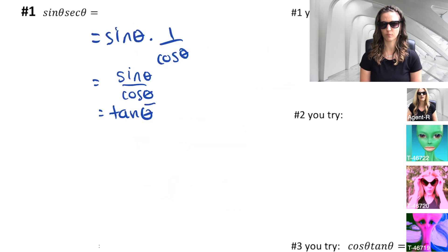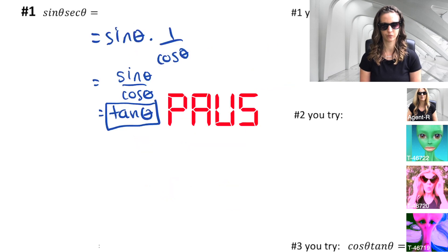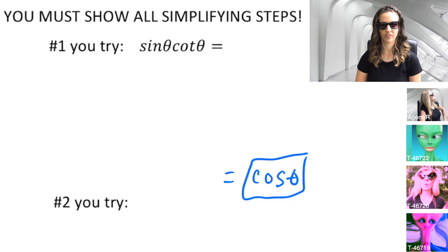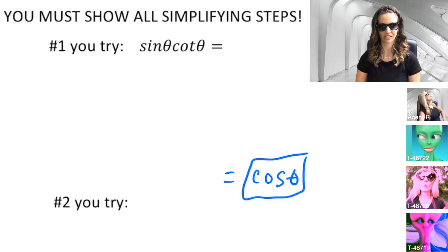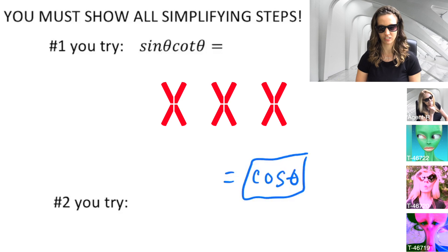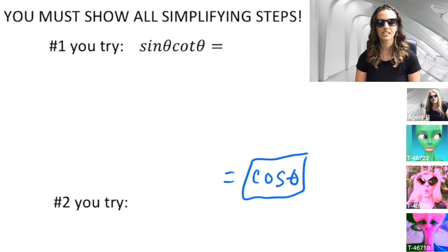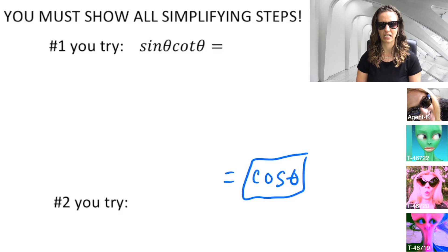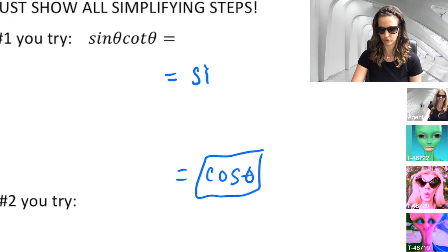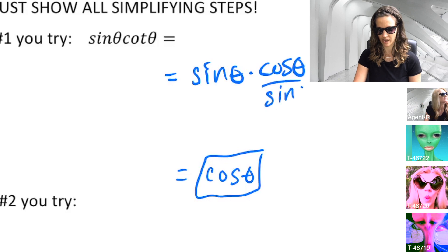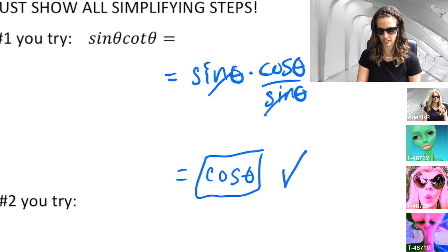Trainees, complete next problem. Pause video. Now that you have completed, trainees, did you get cosine theta? If your work looks like this, this is insufficient. You must show your work for how to get cosine theta. Simplifying steps is essential in completing the mission. You must show sine theta times cosine theta over sine theta for cotangent. The sines divide away, and you get cosine theta.